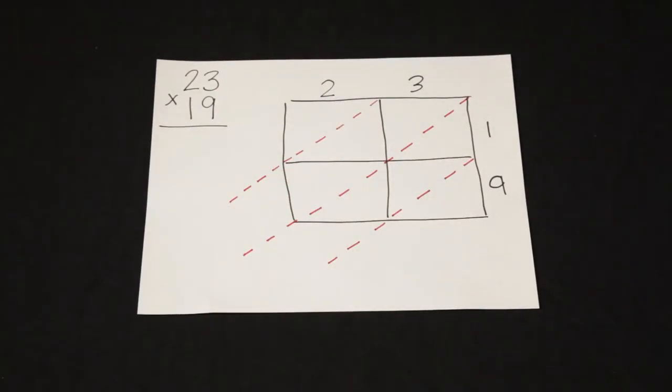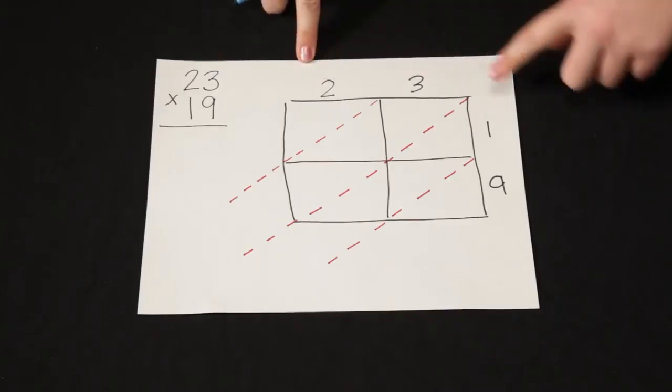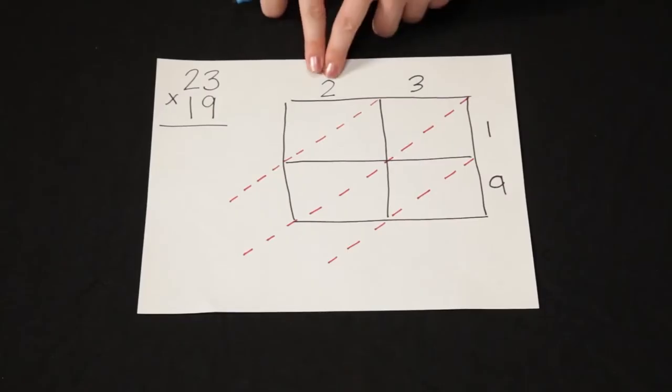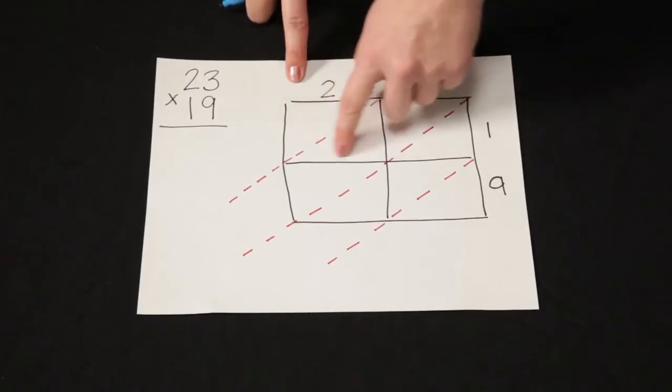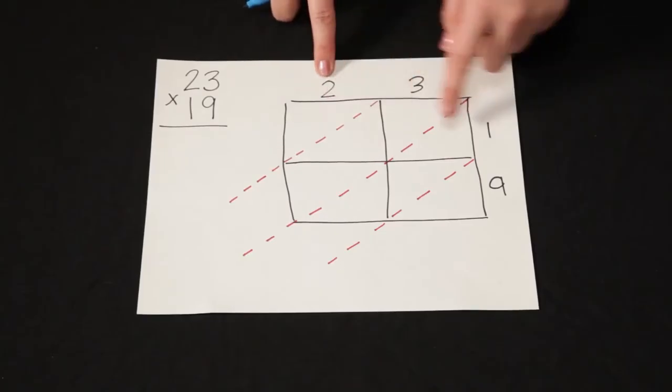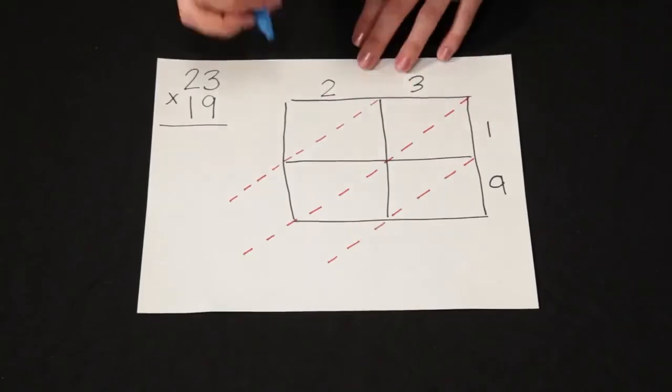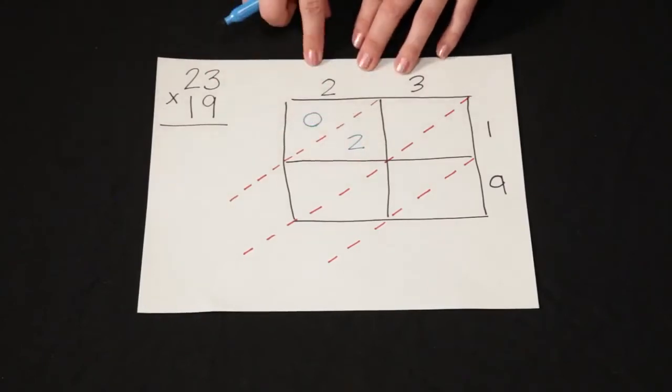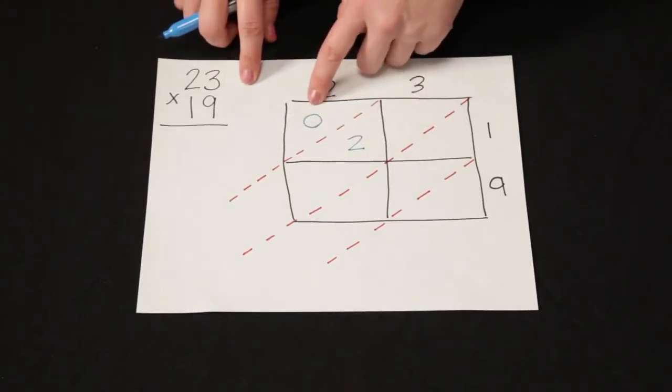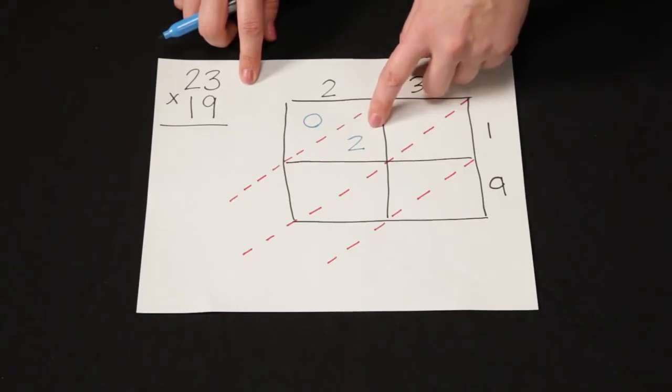Now it's time to do multiplication. I'm going to multiply each number on top by each number on the side. I'll start here. Two times one, the answer is going to go in this box here. Two times one is two. That is zero sets of ten and two ones. The tens go above the lattice, the ones go below the lattice.